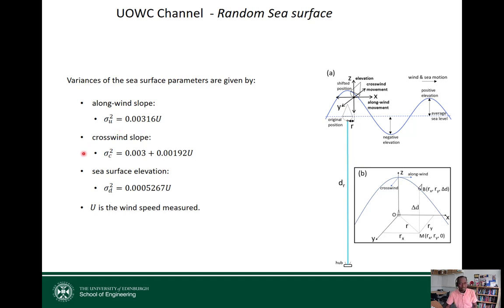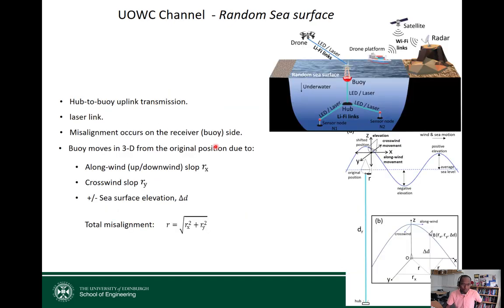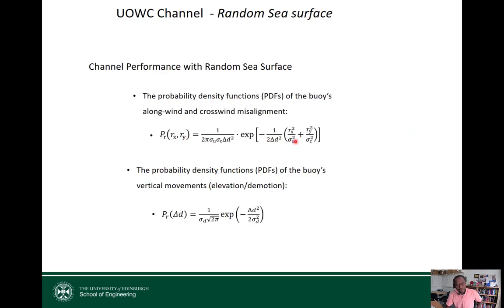Due to movement caused by wind speed, we can evaluate the variance of the misalignment in the x, y, and z directions — their variances are given on the slide and are all related. We can then develop the probability density function for those misalignments. Since we know the variances and each component is approximately Gaussian, we combine the x and y components using the Euclidean distance to find the PDF of misalignment r. Similarly, we find the PDF of Δd, which is also Gaussian with variance σ_d².